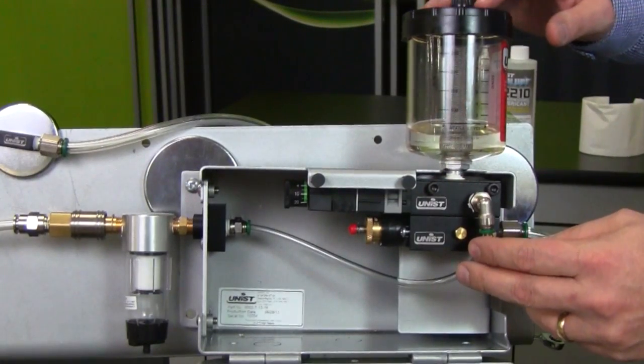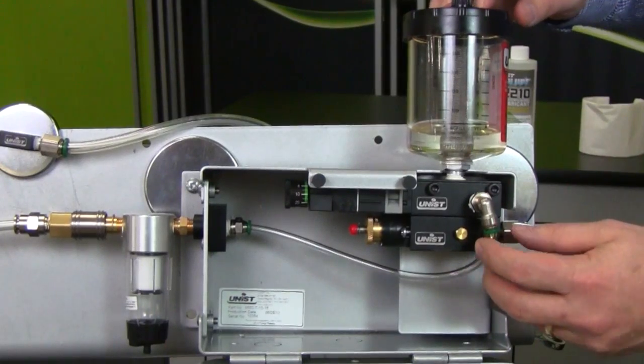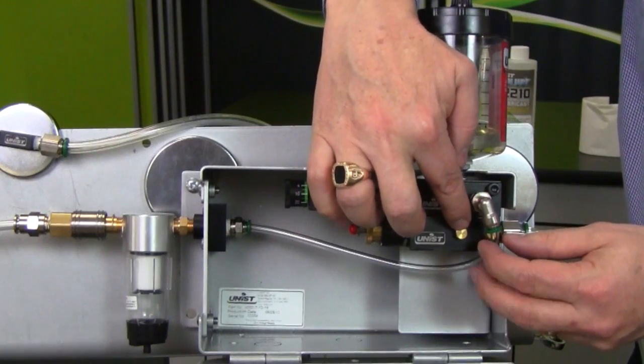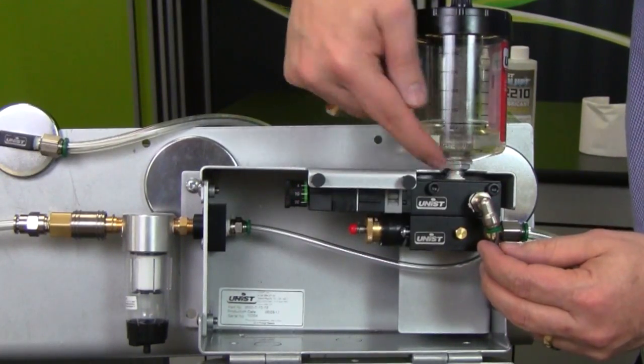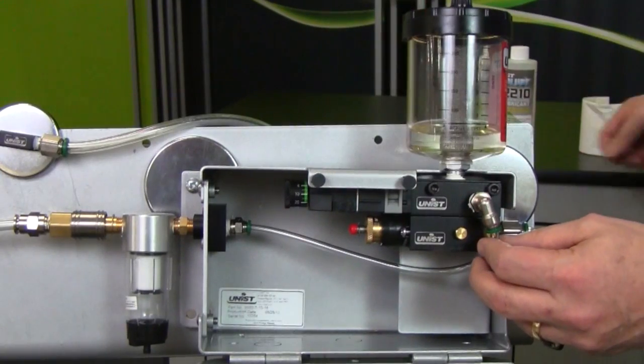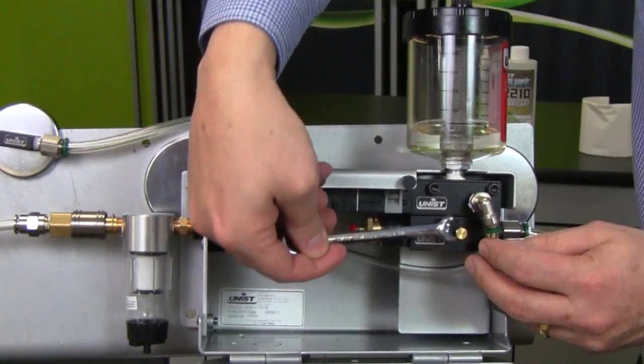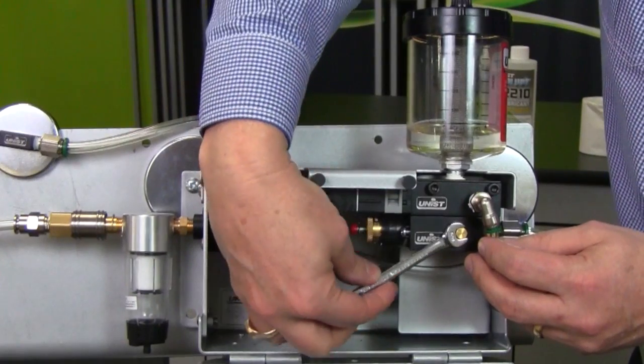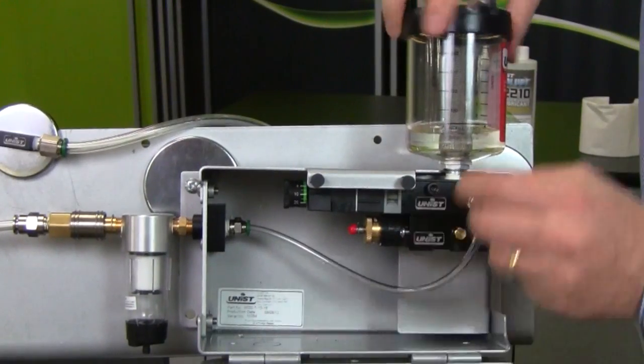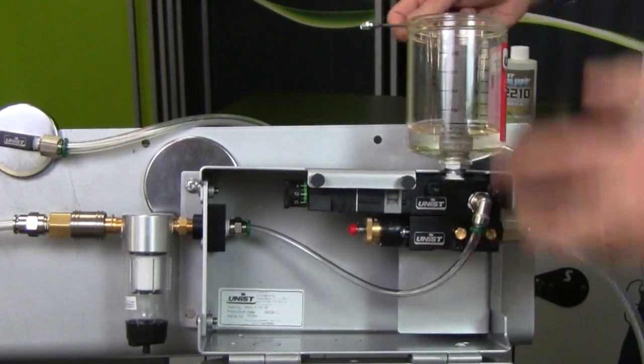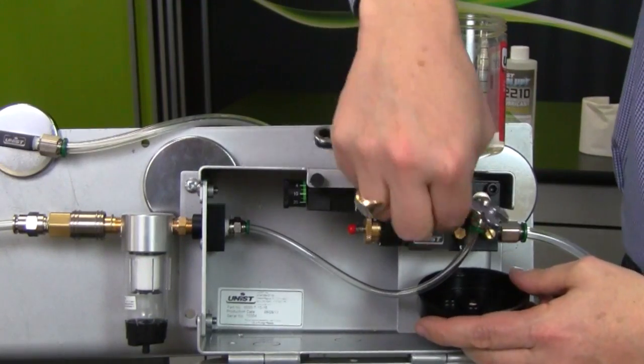Now that we've filled the reservoir with our favorite Cool Lube product, the next thing we want to do is bleed air out of the system and make sure that there's no air trapped in the pump cavity here. Now the systems are primed at the factory, so all you should have to do is loosen this screw. It's a 5/16 hex. You should have to loosen it only a few turns. You can see the fluid dripping out of there.